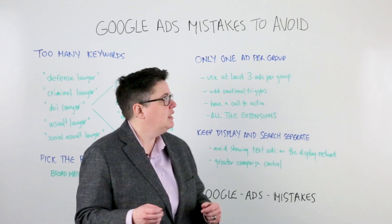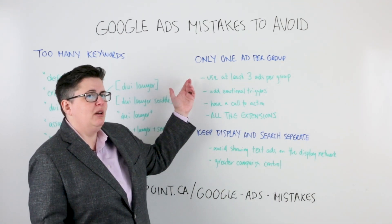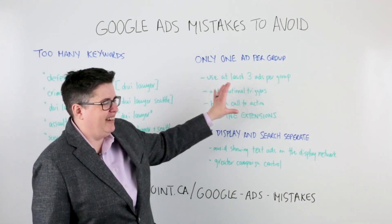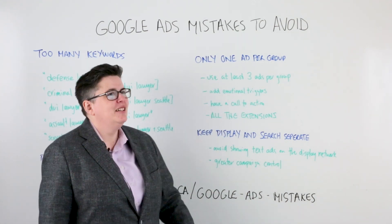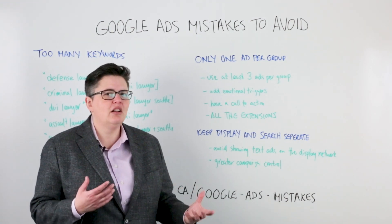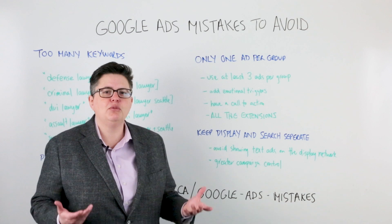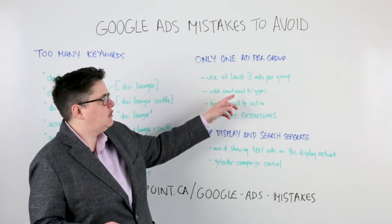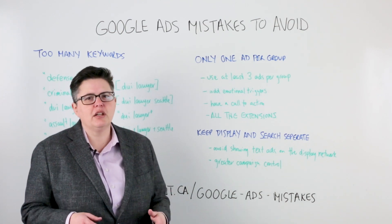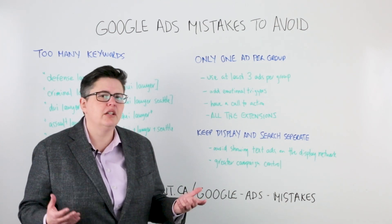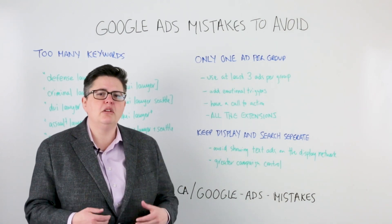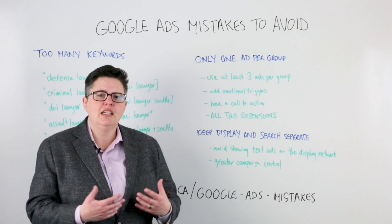The next thing we see is a lot of people who have only one ad per group — and that's a problem. If you're not always testing, how are you going to know if you could do better? Make sure to have at least three ads per group. And look at your ad copy — we see a lot of generic stuff like 'We are the best lawyers, call us.' There's nothing there that says I need to call these people. Really think about how you can add emotional triggers into your copy.